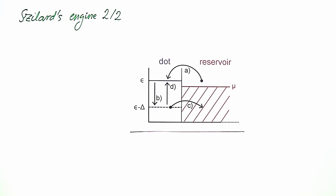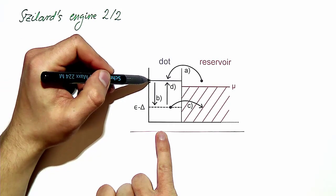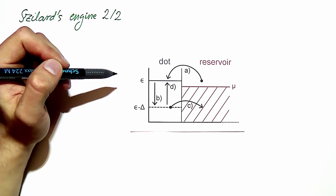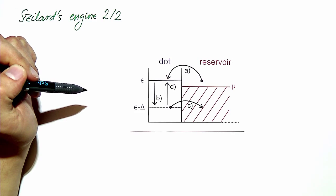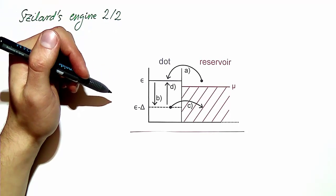Now we move on to the second part of the exercise in which we study the efficiency of Szilard's engine in terms of the conversion rate of information into work. In the first step of the cycle of this engine, we measure the occupancy of the dot and we can continue the cycle if we have measured that an electron has tunneled into the dot, which means that we have to repeat the measurement until we obtain this measurement result.